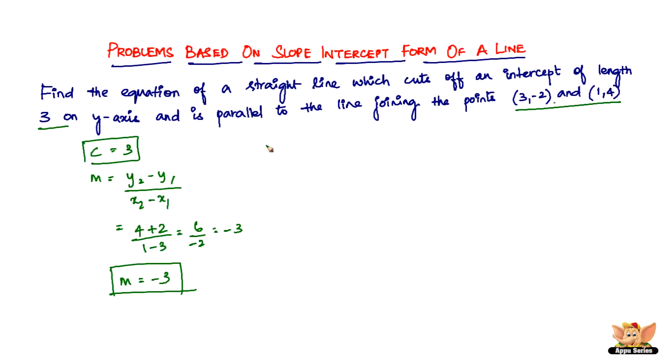The problem is 99% done because all you have to do now is just substitute the values of m and c in the equation y equals mx plus c. So we have y equals minus 3x plus 3 or this can be written as y plus 3x minus 3 equals 0. This is the required equation of the straight line in question.